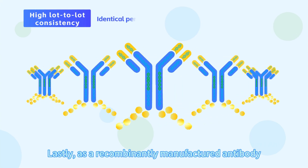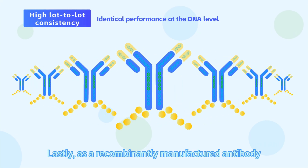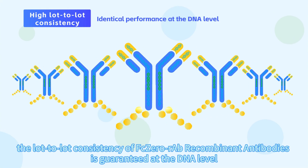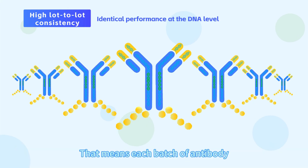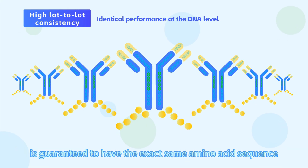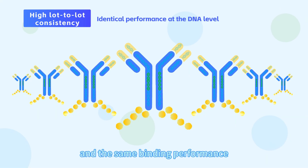Lastly, as a recombinantly manufactured antibody, the lot-to-lot consistency of FCo-RAB recombinant antibodies is guaranteed at the DNA level. That means each batch of antibody is guaranteed to have the exact same amino acid sequence and the same binding performance.